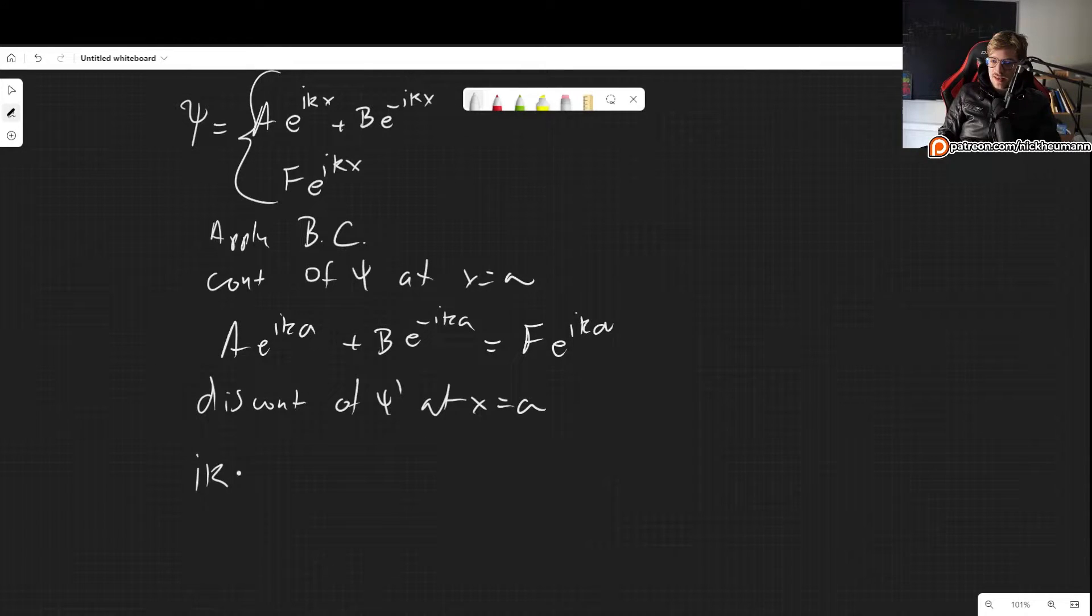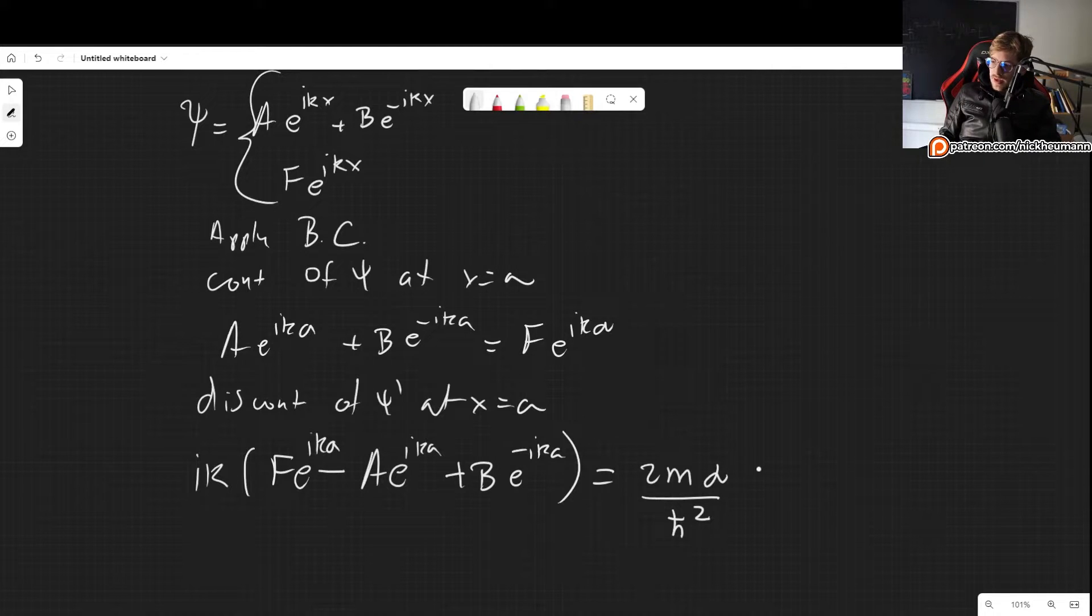taking this derivative, we get i k times F. And then we have minus this derivative. So we get A. And of course, we still need the exponent. So i k a, e to the i k a. And then when we take this derivative, we get a minus sign, which cancels out the minus sign in front. So we get plus B e to the minus i k a.